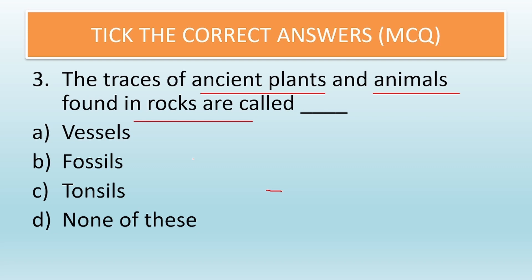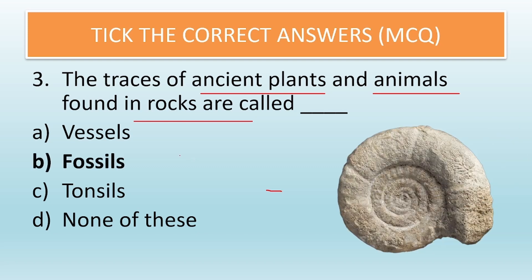The traces of ancient plants and animals found in rocks are called — options are vessels, fossils, tonsils, or none of these. The answer is fossils. Here I have shown the image of a fossil — this is a real image of a fossil.